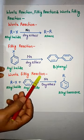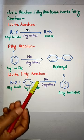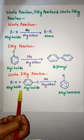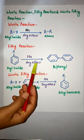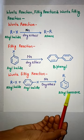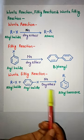Next is Wurtz-Fittig reaction. In Wurtz-Fittig reaction, one reactant is alkyl halide and another reactant is aryl halide. But the reagent is the same, Na dry ether, and the product is alkyl benzene. This is Wurtz-Fittig reaction.